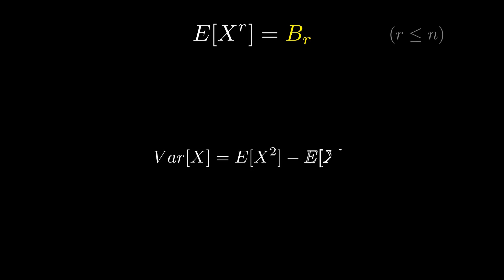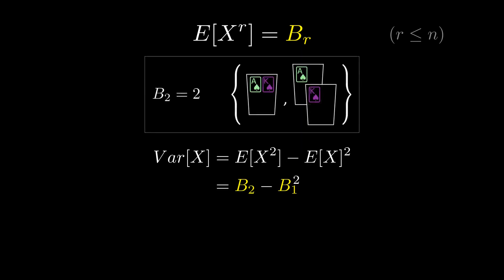Once we establish the main theorem, we can quickly answer the variance question we raised earlier. The variance is e of x squared minus e of x squared, which is b sub 2 minus b sub 1 squared, which is 2 minus 1 squared, which is 1. The variance of the number of students getting their own homework back is 1, just like the expected value was 1.